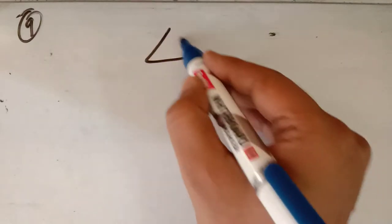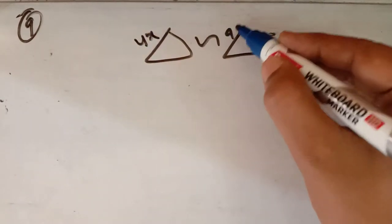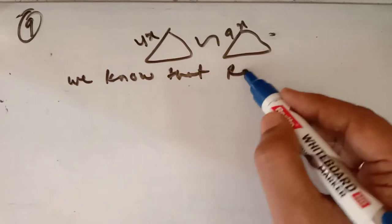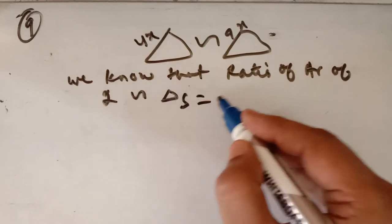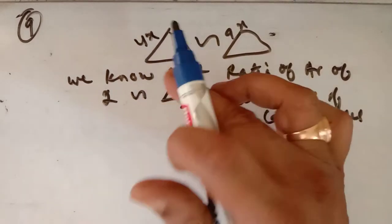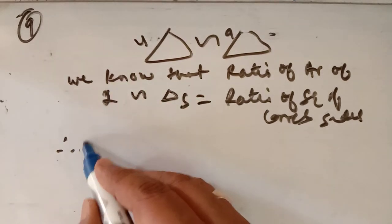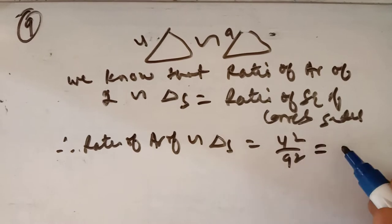Now in question number 9: the sides of two similar triangles are in the ratio 4 is to 9. We have two similar triangles and their sides' ratio is 4:9. Let the sides be 4x and 9x. We know that the ratio of area of two similar triangles is equal to the ratio of the square of corresponding sides.